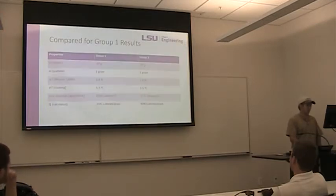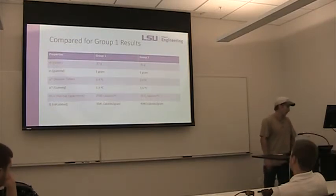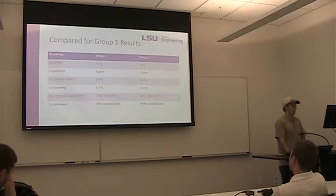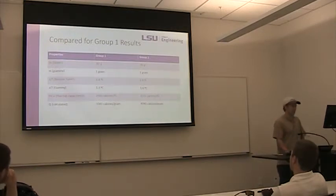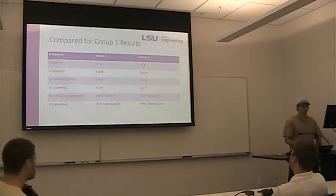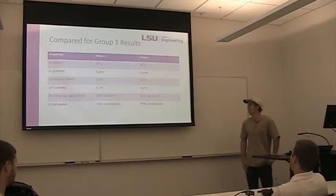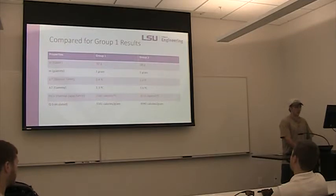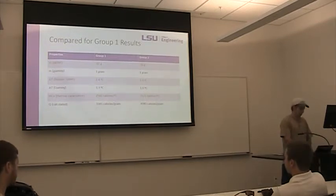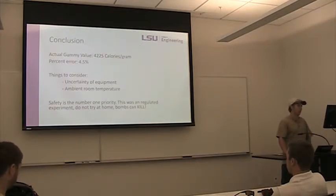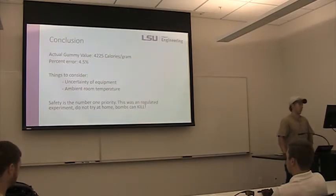That is the graph for the gummy combusting. Comparing our results to group 1, our results for the benzoic acid tablet were pretty similar, but our gummy results were different. Austin said the online value for the gummy was close to 4,200 calories per gram. I don't know exactly what type of gummy we used versus what was found online, but there's some possible room for error there. We're not totally certain of the actual value for heat released, the way we were for the benzoic acid tablet. For our experiment, we had about 4.5% error from the 4,225 calories per gram reference value.